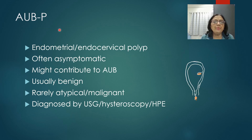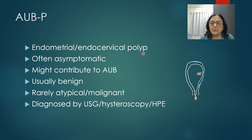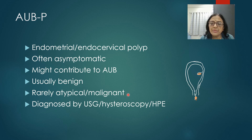AUB-P refers to polyps, which can be endometrial or endocervical. Polyps are epithelial overgrowths containing variable amounts of vascular, connective, or fibrous tissue. They are often asymptomatic and not always contributing to AUB, but may cause intermenstrual bleeding. They are usually benign and rarely atypical or malignant. Diagnosis is by ultrasonography or hysteroscopy, and tissue removed should always be sent for histopathological examination.